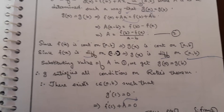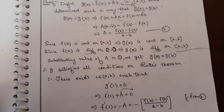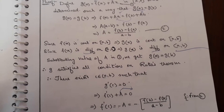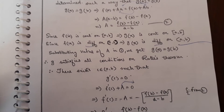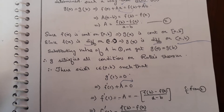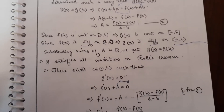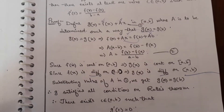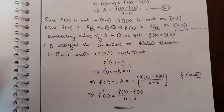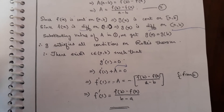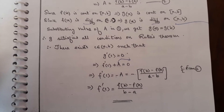Since f(x) is continuous on closed interval [a, b], g(x) is continuous on closed interval [a, b]. Since f(x) is differentiable on open interval (a, b), g(x) is differentiable on open interval (a, b). Substituting the value of A from equation two, we get g(a) = g(b). Therefore g satisfies all conditions of Rolle's theorem.